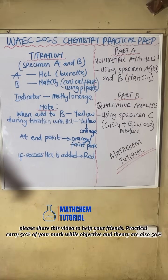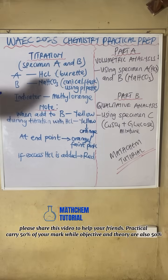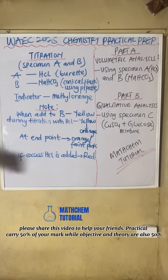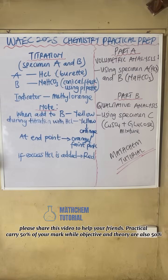Specimen B is formed from the reaction between H2CO3, that is carbonic acid, plus sodium hydroxide. Sodium hydroxide is a strong base while H2CO3 is a weak acid. The reaction between a strong base and a weak acid gives us a basic salt. So NaHCO3 is a basic salt — it has the properties of a base in solution. That is why NaHCO3 is used as specimen B, which acts as a base.